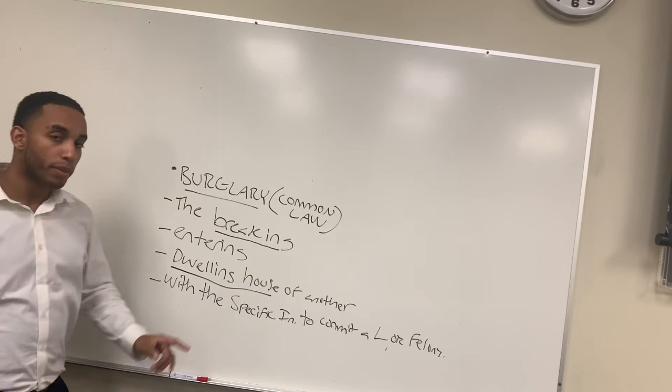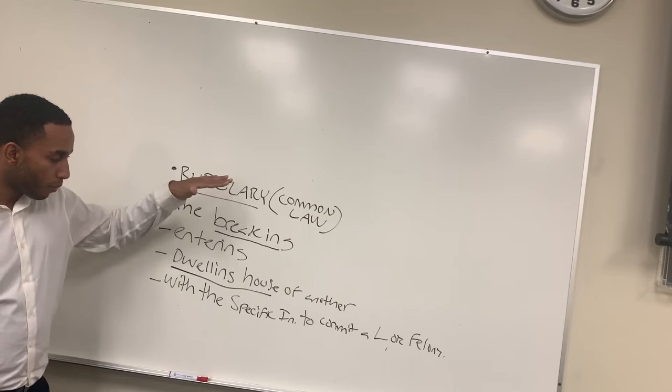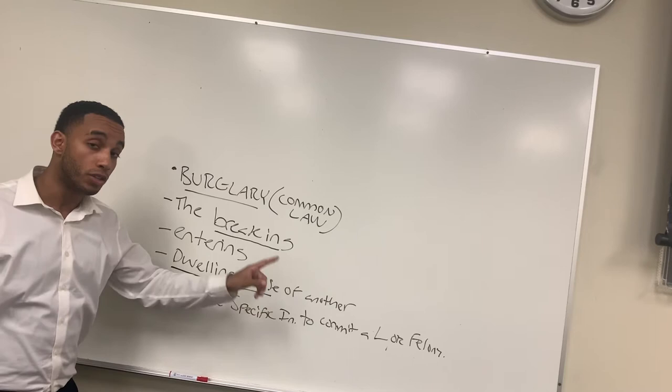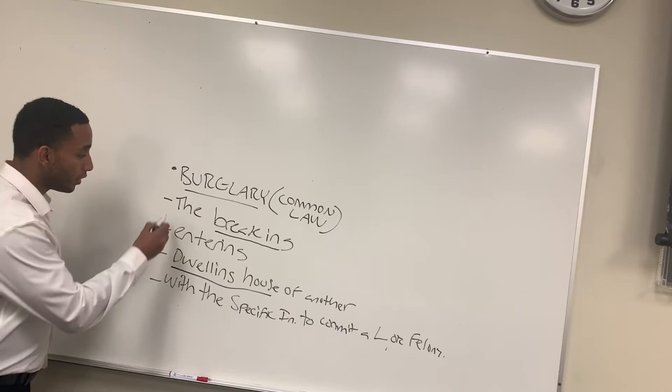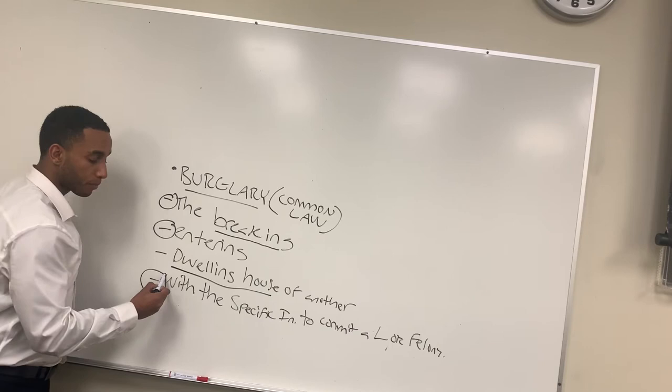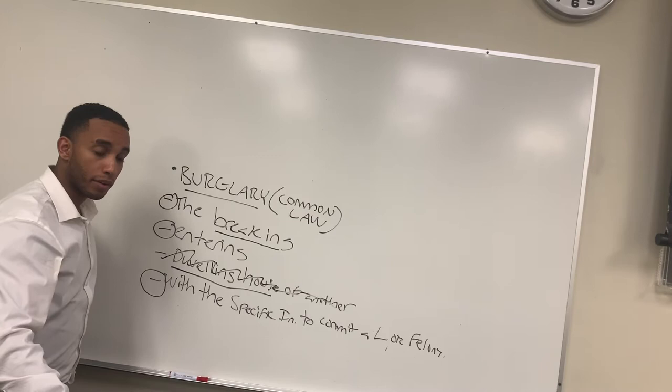When we think about modern law, it is basically the same elements except the dwelling house of another during the nighttime — those elements are not required. All we need is the breaking, the entering, and lastly the felonious intent. The dwelling house requirement is gone, and the nighttime requirement is also gone. That's modern law.